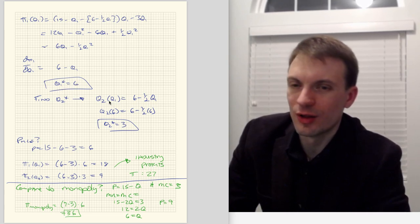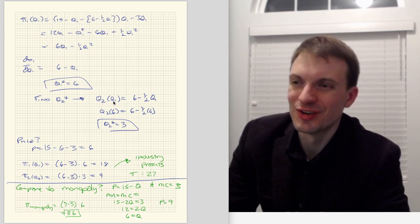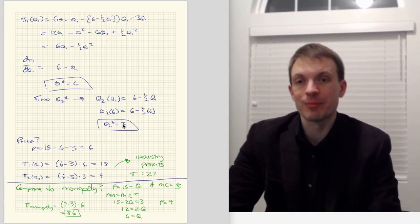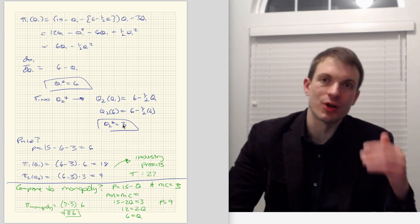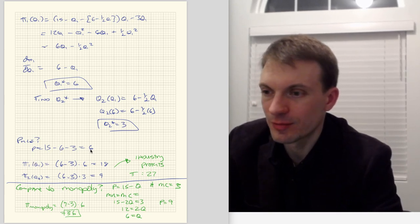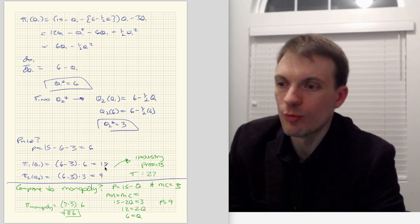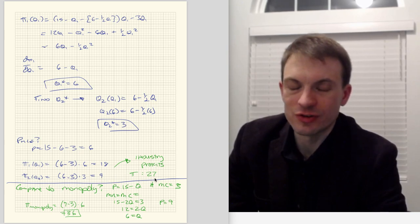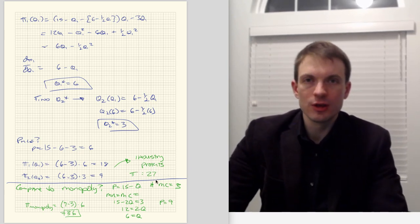So what's Firm 2 going to do? Conveniently, we already have Firm 2's reaction function. Plugging in Q1 = 6, we get Q2 = 6 minus one-half times 6, so Firm 2 brings a quantity of 3 to the market. Firm 1 comes to the market with quantity 6, Firm 2 observes this and optimally brings 3. The price is 15 minus 6 minus 3, or 6. Computing profits as (price minus marginal cost) times quantity: Firm 1's profits are (6 minus 3) times 6 = 18, Firm 2's profits are 9, and joint industry profits are 27.